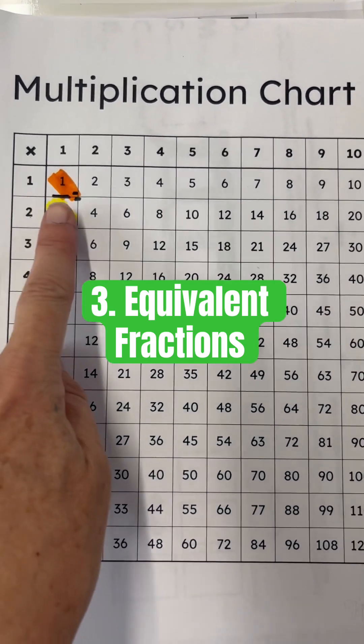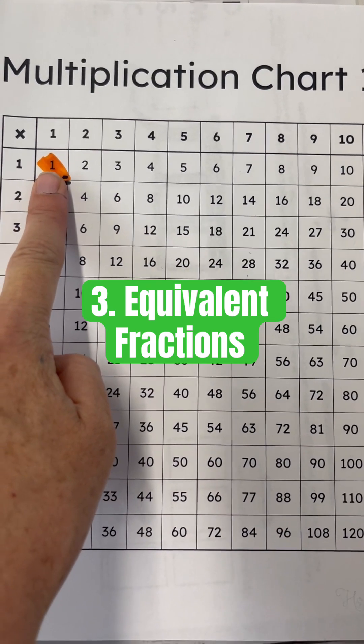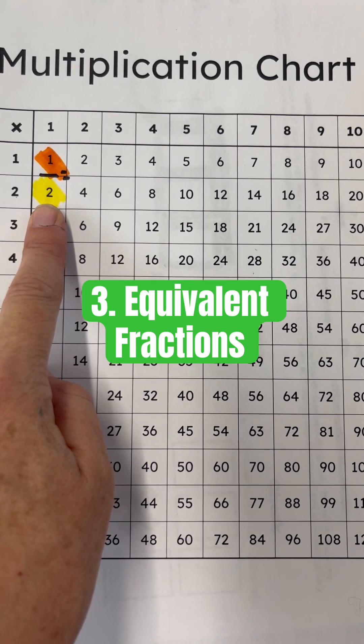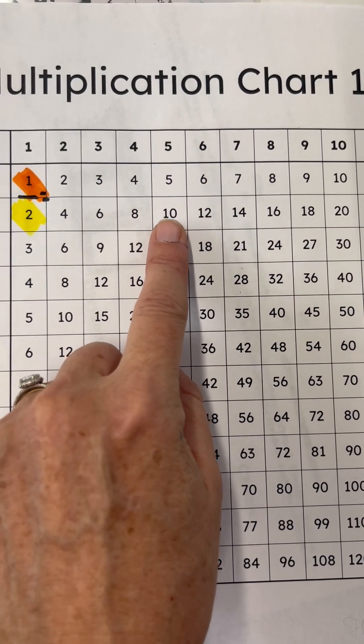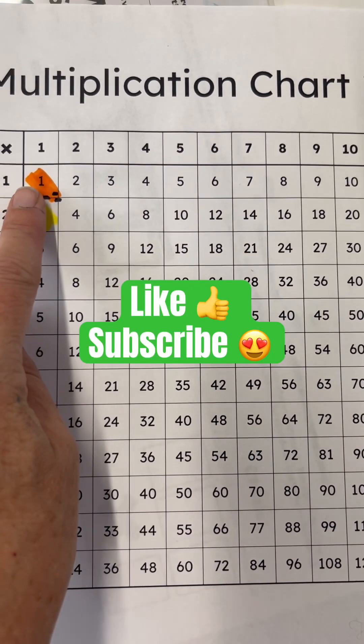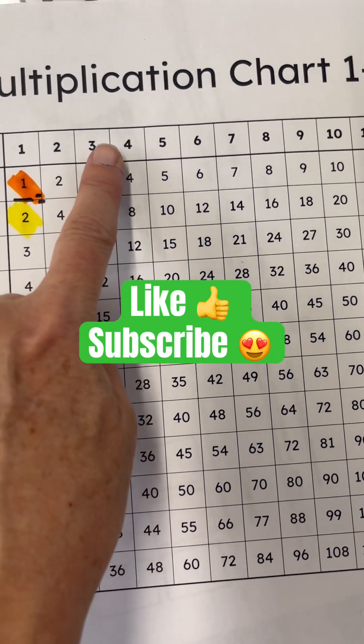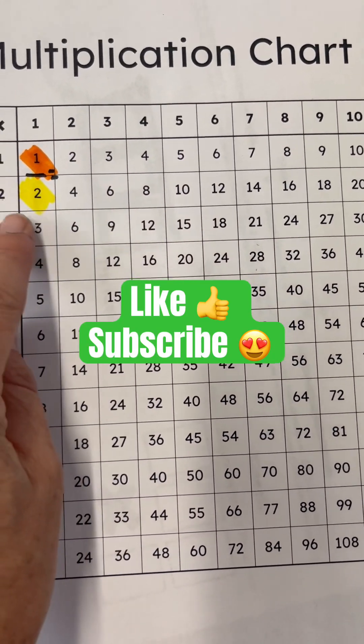Equivalent fractions. 1 half, 1 being the numerator, 2 being the denominator, times 5 is equal to 5 tenths. 1 half times 3 is equal to 3 sixths.